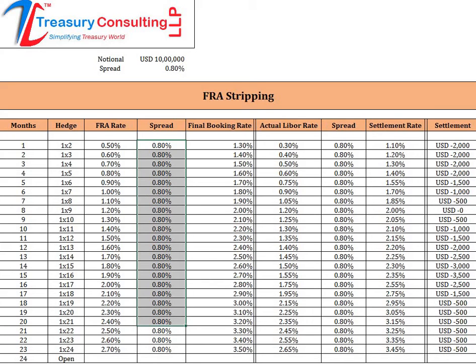So this was the purpose of the video, wherein we taught you that forward rate agreement stripping downwards is where you end up in losses — as shown in this column. In the earlier videos you ended up in a gain. We would like to thank you very much for your time.